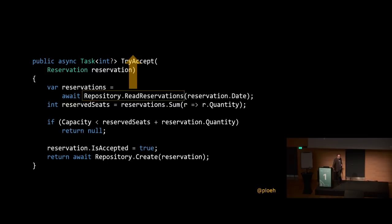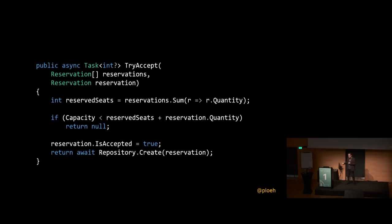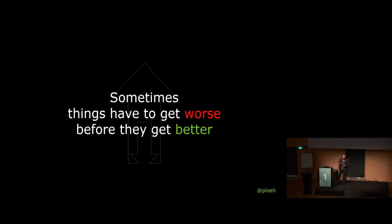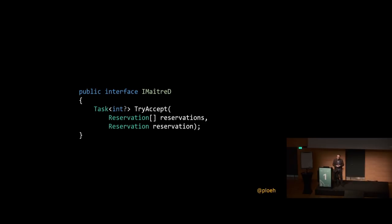Starting with ReadReservations — the easier one to move. This method call always happens unconditionally. You might say: why does TryAccept need to do this? It just wants to make a business decision. Why interact with the database? Couldn't we just make that data a requirement for calling TryAccept — pass the reservations as an input argument? So instead of calling the method, those reservations become part of the arguments you supply. That means we need to add that argument to the IMaitreD interface as well, which I acknowledge looks like another leaky abstraction for now — but trust me, it'll get better.